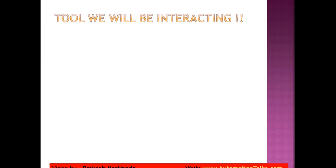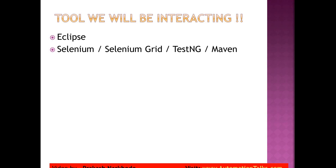So what tools will we be using? The first is Eclipse as the development environment, then Selenium, Selenium Grid, TestNG, and Maven — these are all used for creating the test automation framework. Then Git and GitHub as the source code repository, and Jenkins as the continuous integration tool.